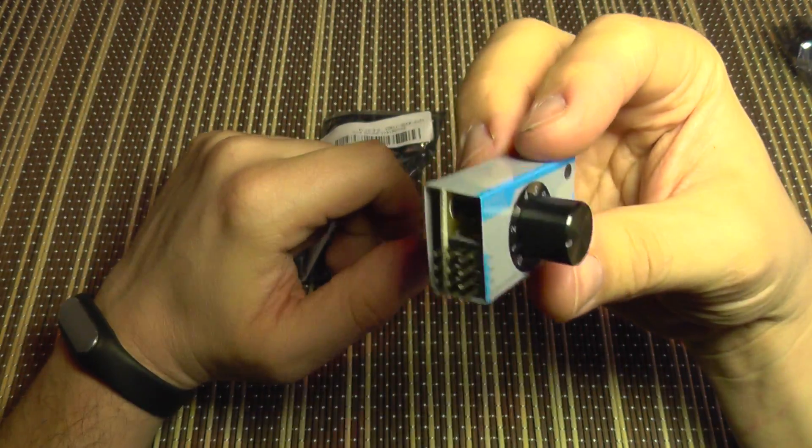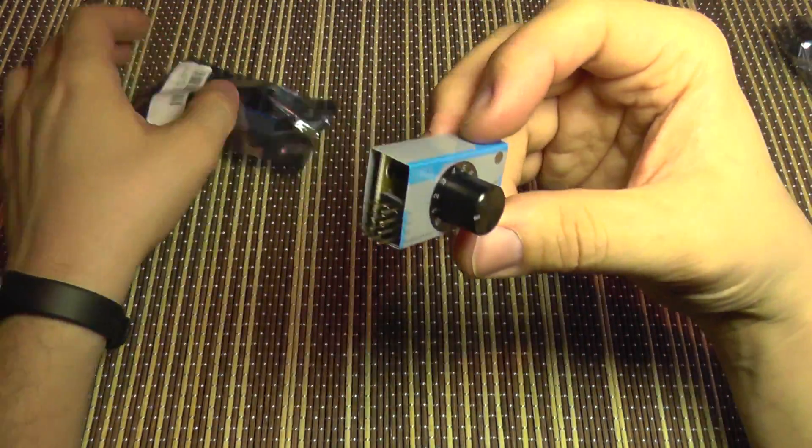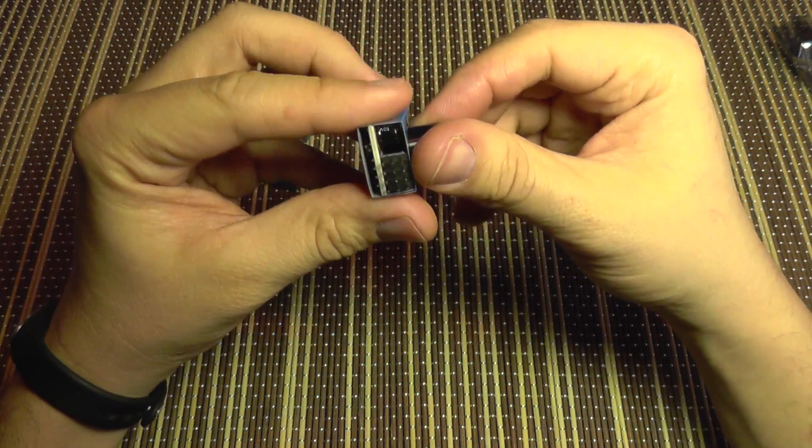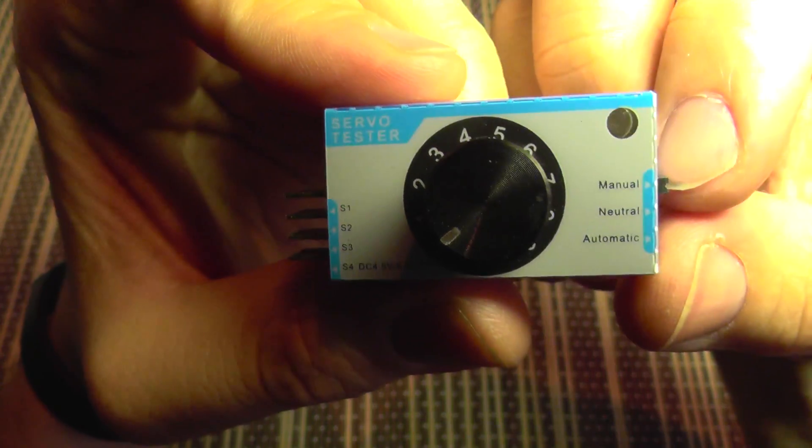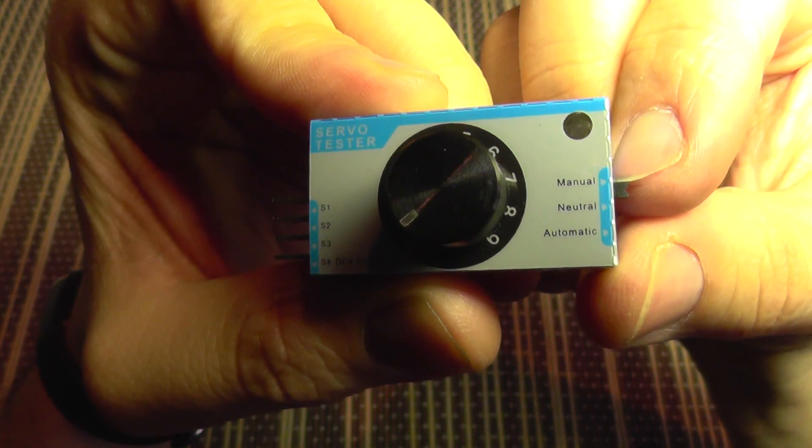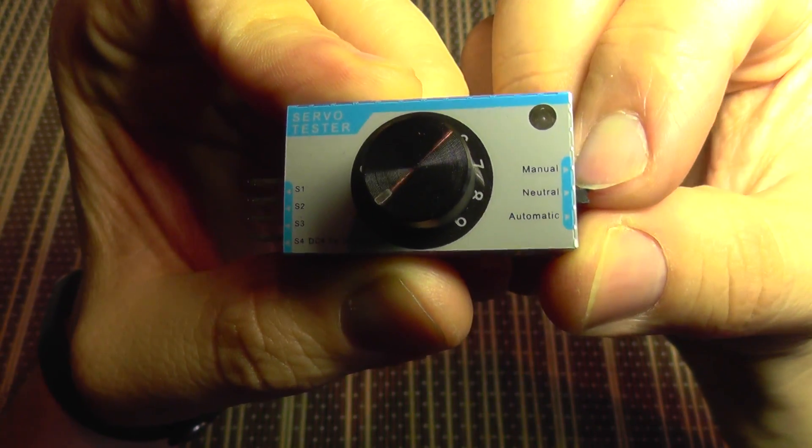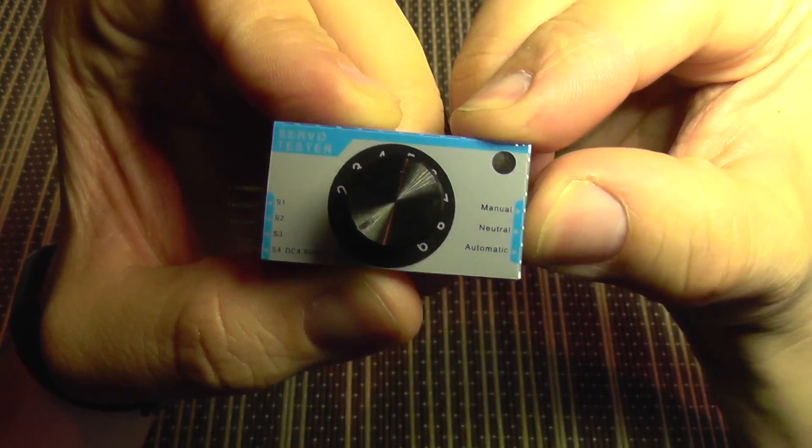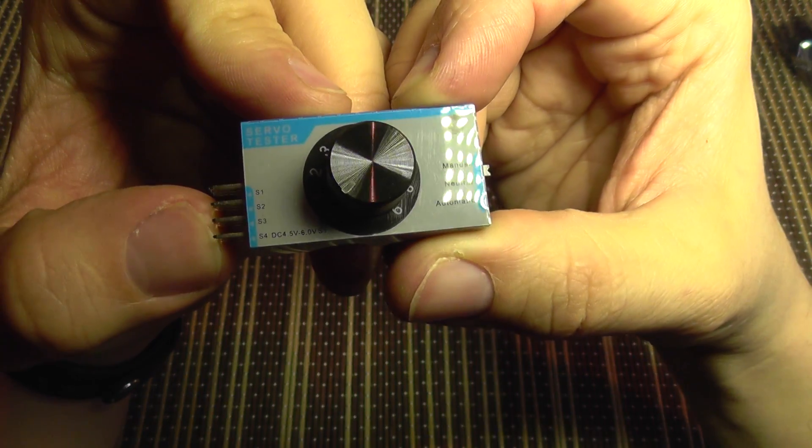I'm going to show you a very cheap one that works very well. This is already opened up so I'm going to show you how to hook it up and how it works. First, some details: it has a three-position switch with manual, neutral, and automatic functions. Here you can connect up to three servos and power.